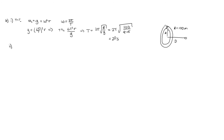In part 2 of this question, we're asked to come up with an expression for the mutual potential energy between the ring — which has mass capital M — and a mass little m at a distance d away. To do this, we consider a little bit of the ring with mass dm. If we sum up all the dm's around the ring, we just get the total mass of the ring, which is M.